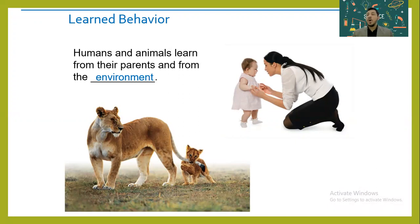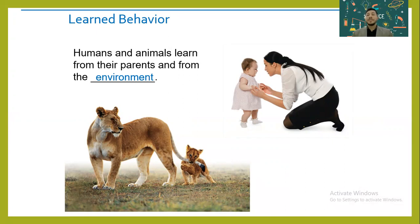Even animals have learned behaviors. If a dog gets closer to a skunk, the skunk gives out a bad smell, so the dog learns never to get closer to a skunk again — it learned this, it wasn't born knowing it. Lion cubs don't know how to hunt at birth, but they watch their parents hunt in groups, and the mother teaches the cub how to pounce on prey. Different animals learn different behaviors to help them survive.